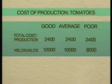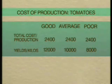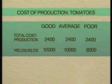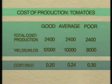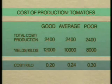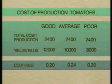Yields will vary. The only important yield is how much is sold. In this case, the tomato yield varies from 12,000 kilos down to 8,000 kilos. The cost of production is divided by the number of kilos to give us the cost of production per kilo of tomatoes. In this example, a range of costs is given.